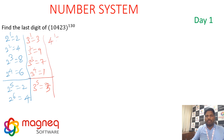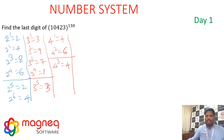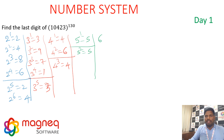For digit 4: 4¹ ends in 4, 4² ends in 6, 4³ ends in 4 — repetition after 2 powers. For digit 5: always ends in 5. For digit 6: always ends in 6.